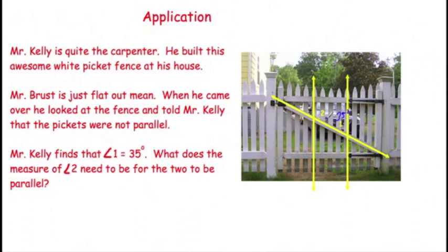Well, those are same side interior angles, so for them to be parallel, angle 2 would have to add up to 180. So 35 plus what equals 180? 35 plus 145 should equal 180. So if Mr. Kelly wanted to make sure, he should have made sure that that board right there, that angle measured 145 when he was making it. All right. Thank you.